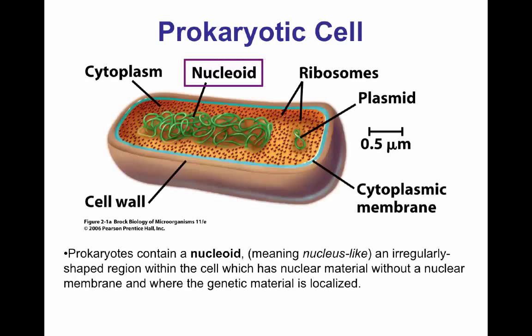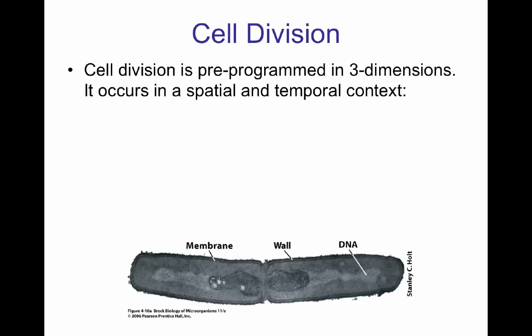Let's take a look at the prokaryotic cell, and in particular the nucleoid — the structure shown here as the condensation of genetic material in bacteria. It's an irregular region with no membrane the same way a eukaryotic cell has, and it's directly in contact with the cytoplasm. During cell division in bacteria — both rods and cocci — the division is programmed in three dimensions and must occur in a spatial and temporal context.